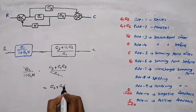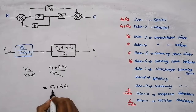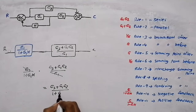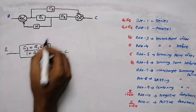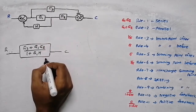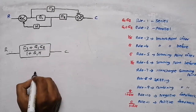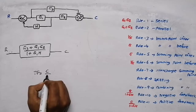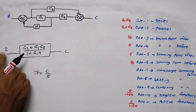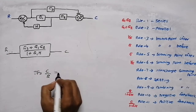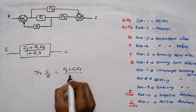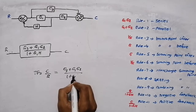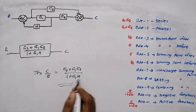Now as you can see, these two blocks are in series. When two blocks are in series we multiply them. When we multiply both blocks, G1 and G1 cancel. The final answer we get is (G3 + G1G2) divided by (1 + G1H). The transfer function — output by input — is C/R = (G3 + G1G2) / (1 + G1H).